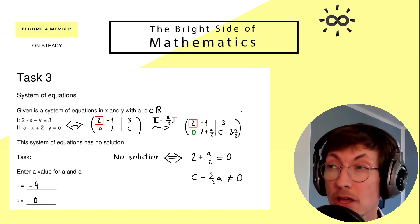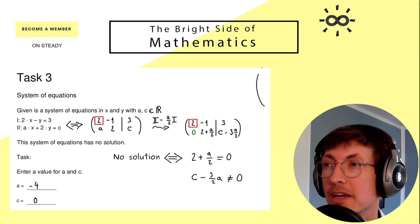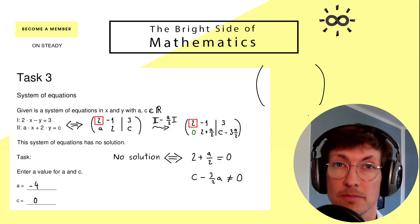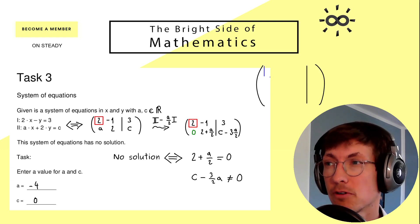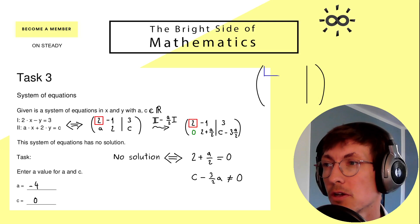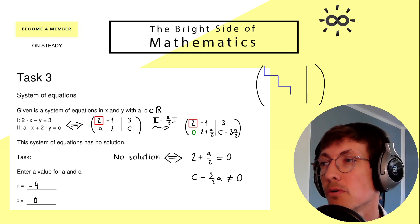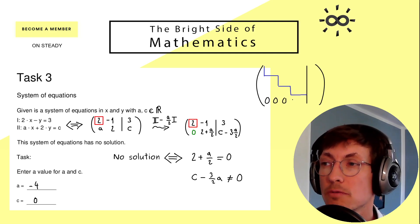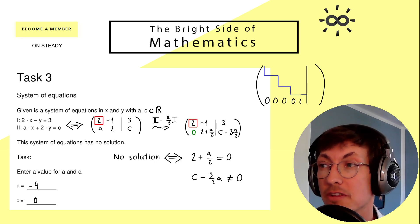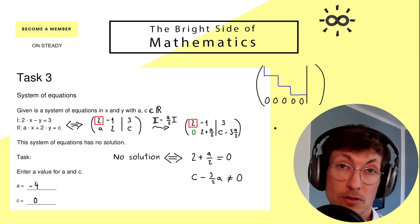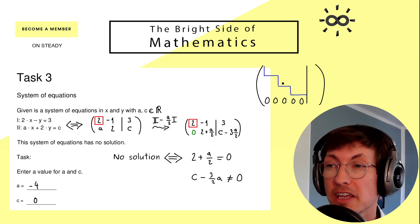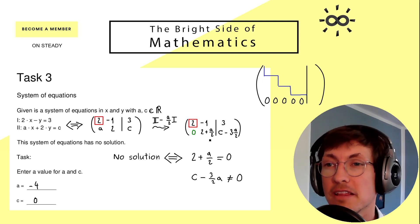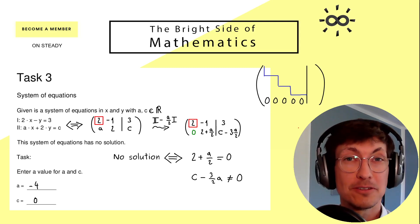But still, in the end you should know that the row echelon form gives you the solvability of the system. This so-called row echelon form could look complicated, but the important part is that below the staircase you only find zeros, which means you could have a whole zero row at the bottom on the left-hand side.